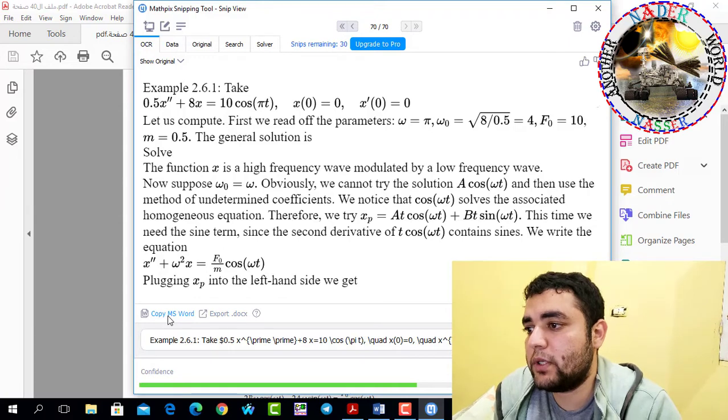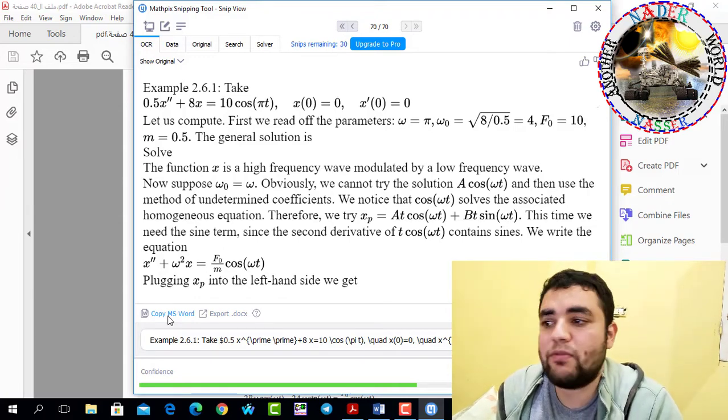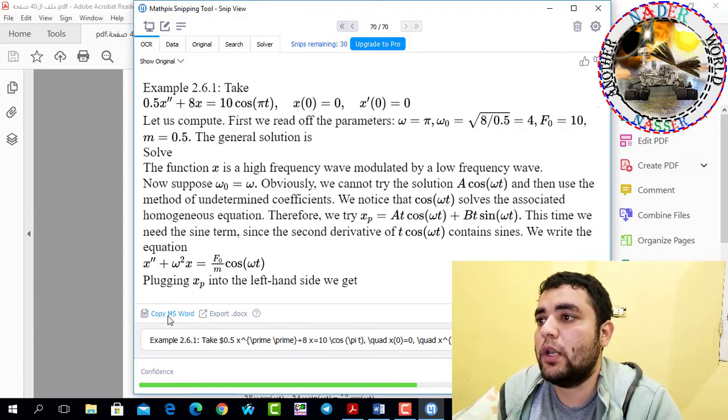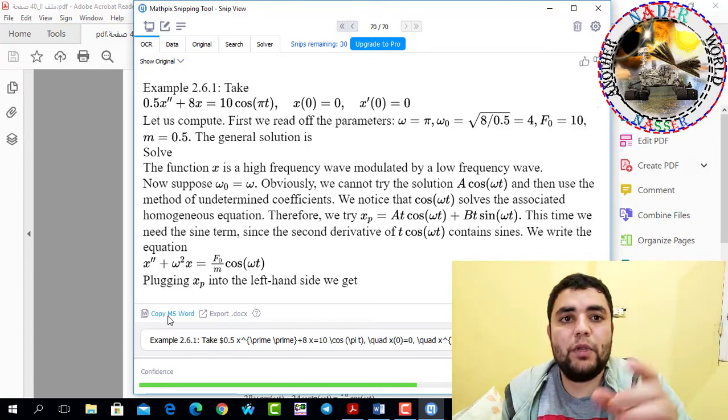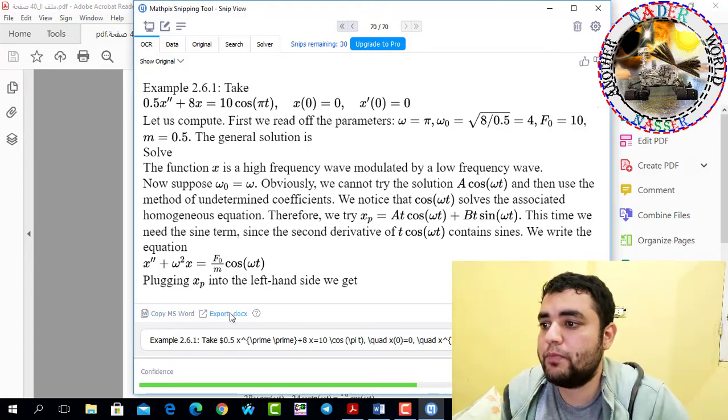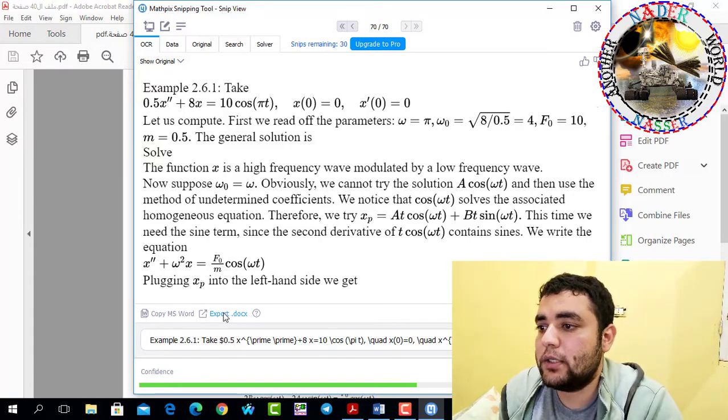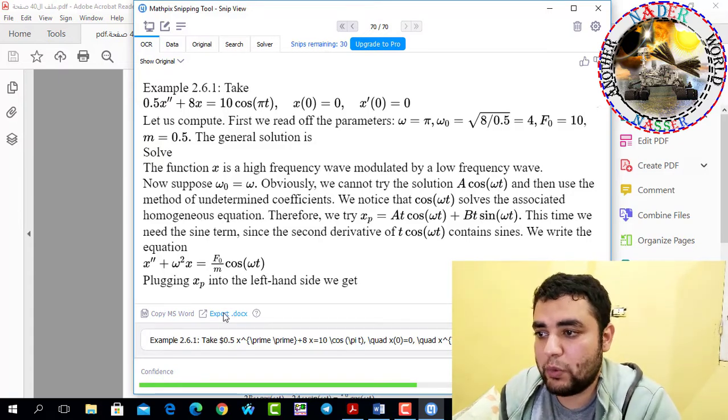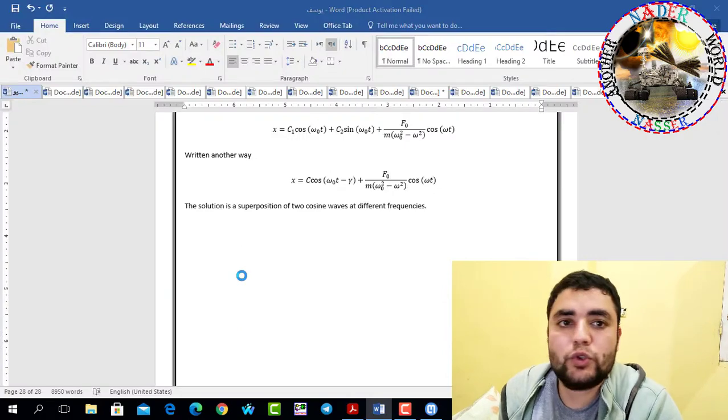If we choose the first one, copy to MS Word, we will find that it will copy only one mathematical equation. But if we do the second one, which we will do, export to Docs...